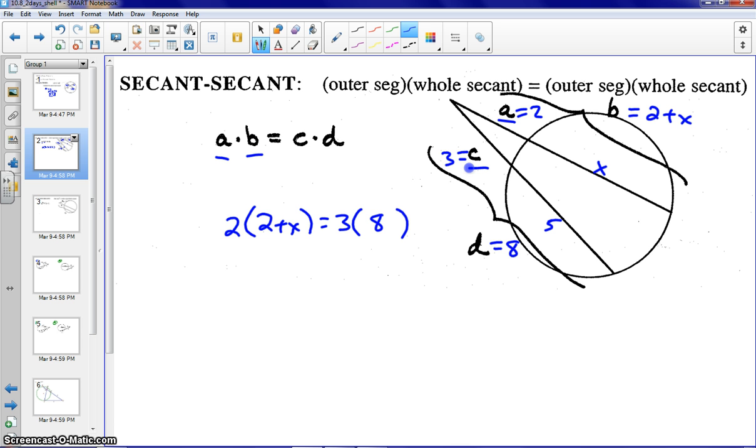So if we go ahead and solve, we'll distribute through. Let me go ahead and erase that. So we'll get 2X equals 20, so X equals 10. And yes, we were looking for find X. That's fine. So that's an example of a secant-secant.